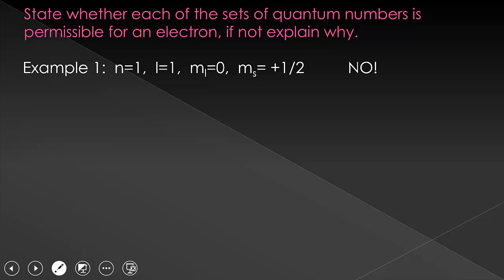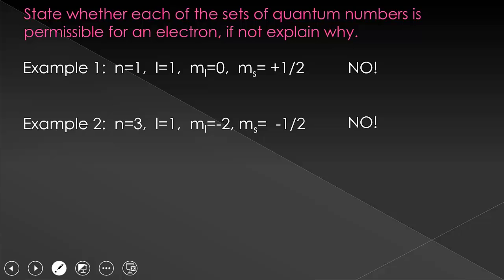We'll move a bit faster through the next examples, but pause and answer on your own first. Here we have N equals three, L equals one, M sub L equals negative two, and M sub S equals negative one-half. The answer is no. For N equals three, L is allowed to be zero, one, or two, so L isn't a problem. However, since L is equal to one, M sub L is only allowed to equal negative one, zero, and one. You might say that since N equals three, L could equal two, which means M sub L could equal negative two — but I told you L is equal to one, and therefore the only allowed values of M sub L are negative one, zero, and one.